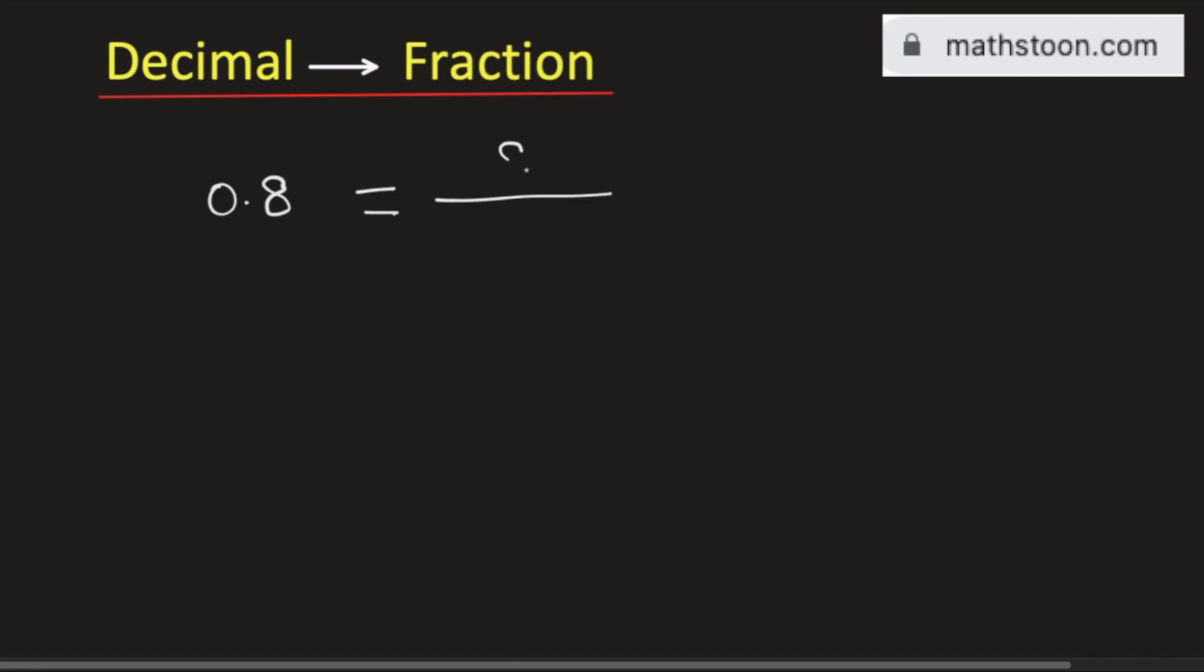So here we need to write 8, and its denominator will be equal to 10 to the power 1. Here 1 comes because there is only one number after the decimal. Now simplifying we will get 8 divided by 10.